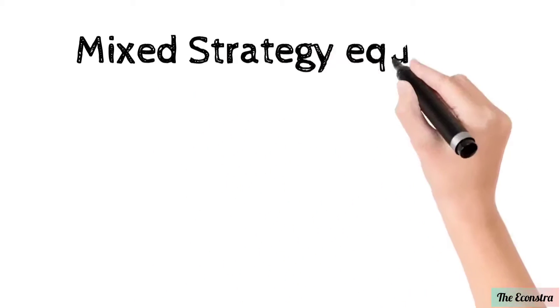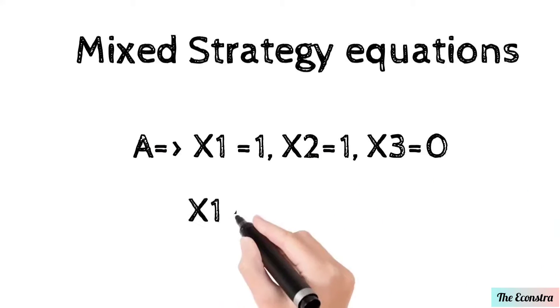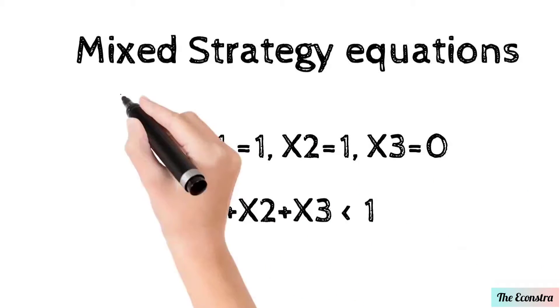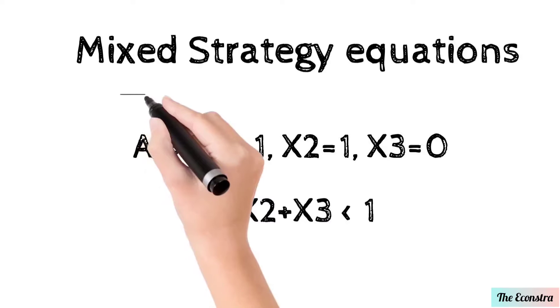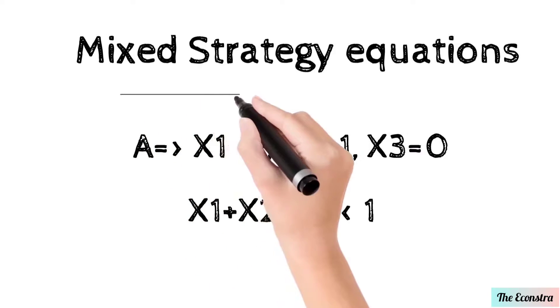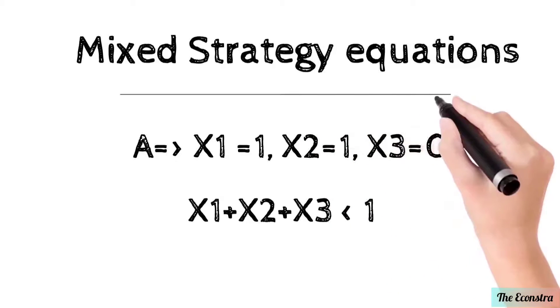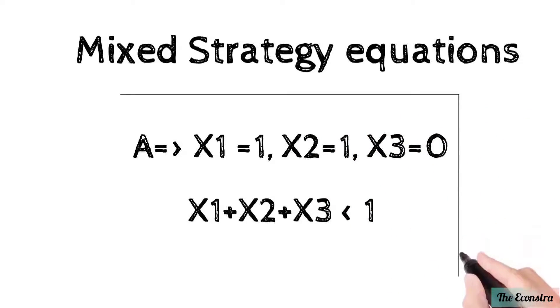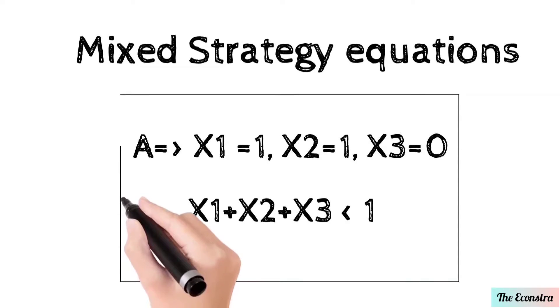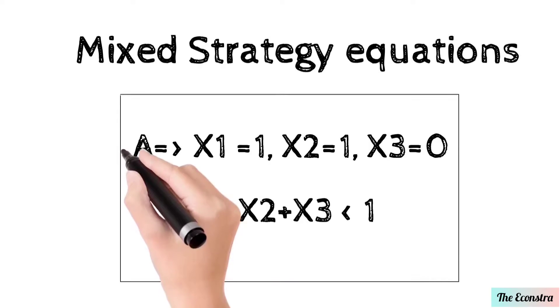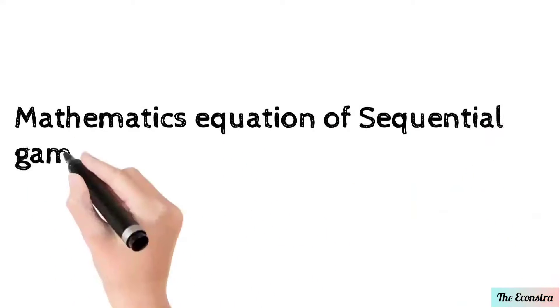Mixed strategy equations: Here A represents X1. X is player 1, and 1 is the strategy. So player 1 X1 means the player chooses strategy 1 equal to 1. X2 is the second player choosing strategy 1. X3 gets no strategy. So the result is X1 plus X2 plus X3 is smaller than 1. Mathematical equations equal to 1.